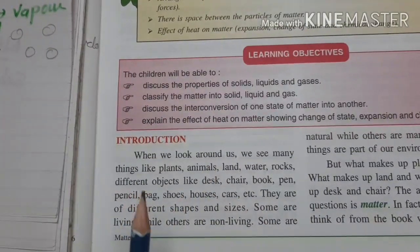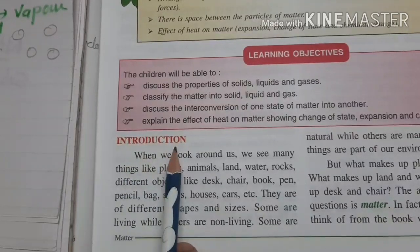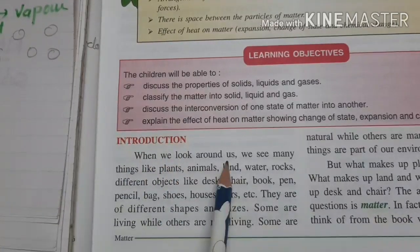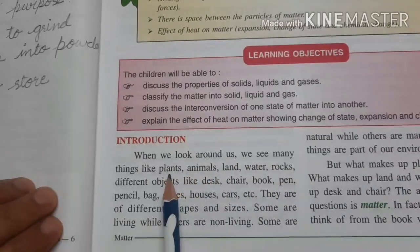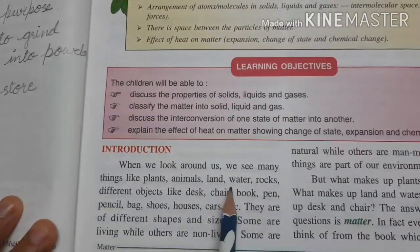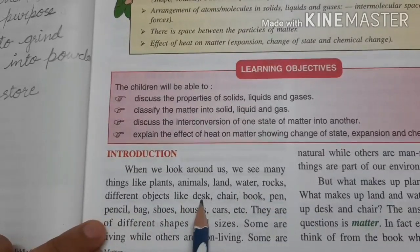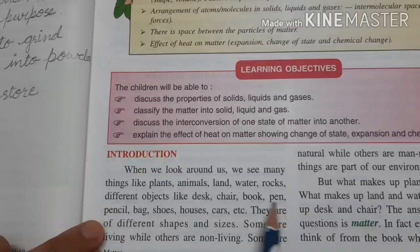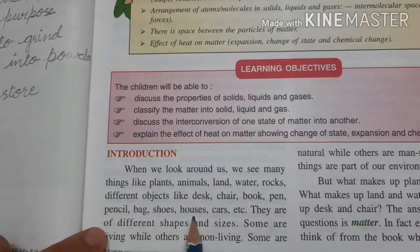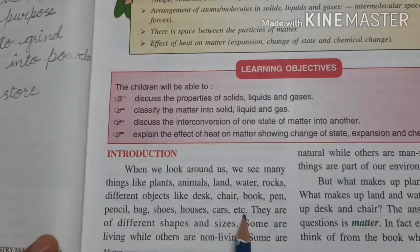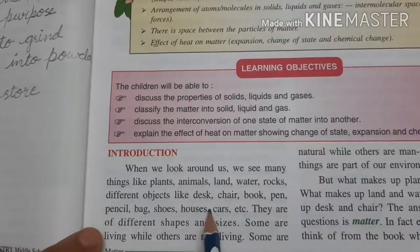So all topics we will do here one by one in detail. First, the introduction. When we look around, we see many things like plants, animals, land, water, rocks, different objects like desk, chair, book, pen, pencil, bag, shoes, houses, cart, etc. All the examples I mentioned — plants, animals, land, water — all the natural things that you can see and touch.